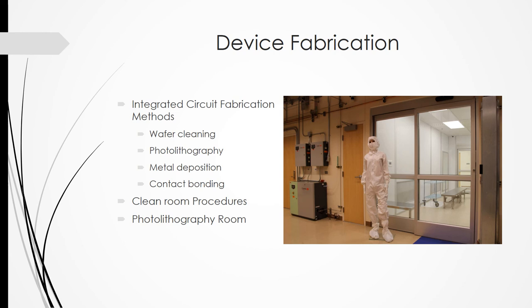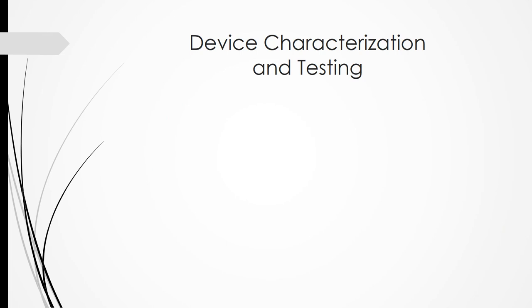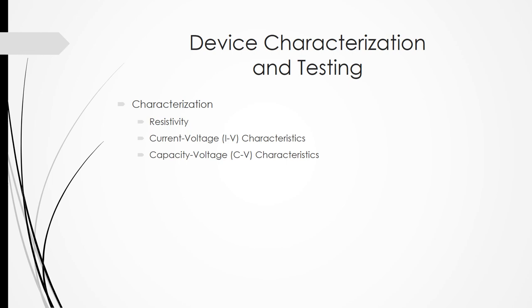Also, inside the clean room, we have access to the photolithography room, which houses the appropriate environment and equipment for our fabrication. Once our fabrication is done, we will have to develop the device characteristics of importance to us: resistivity, current-voltage characteristics, capacity-voltage characteristics, and then once all this is done, we can test this for its optical detection and its performance.